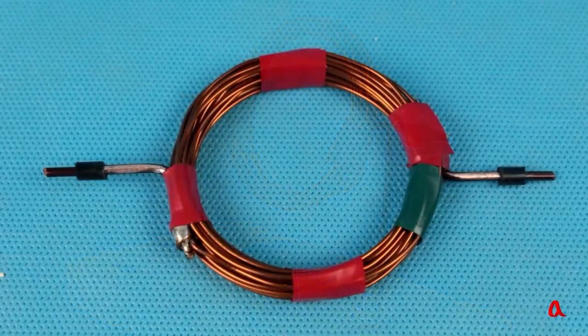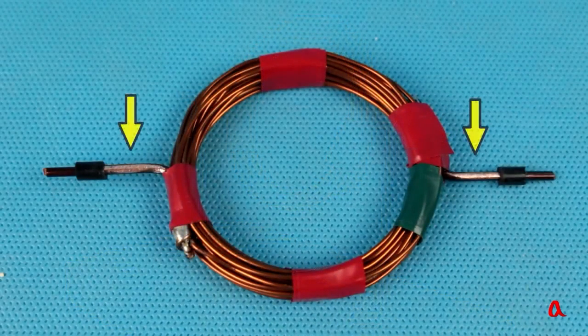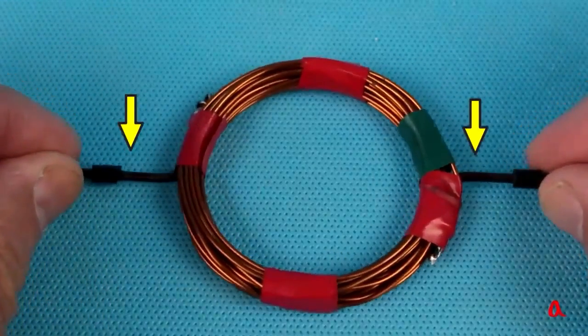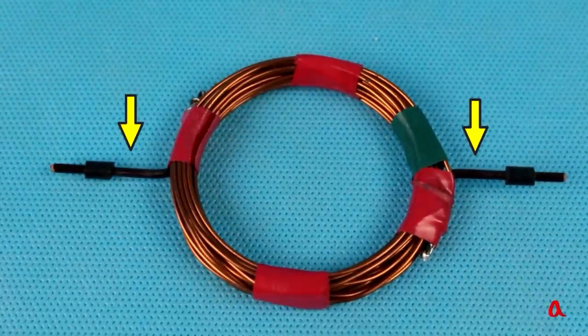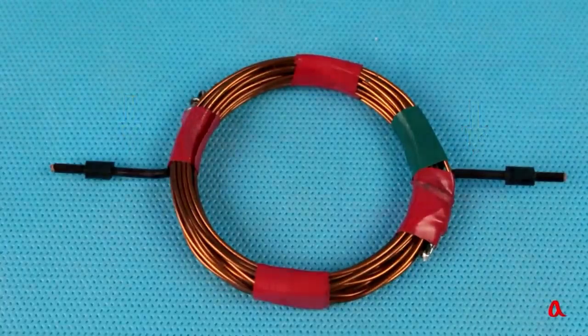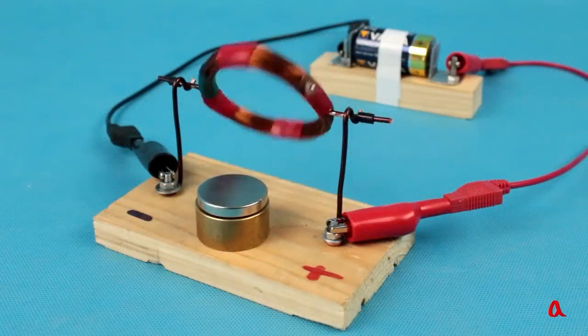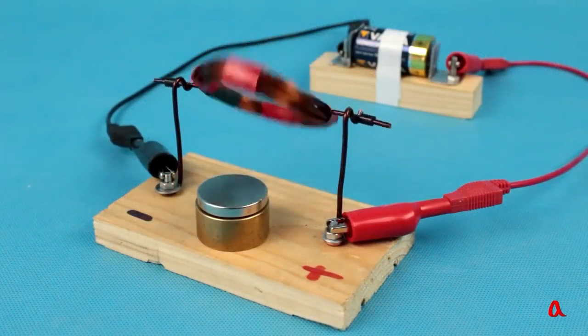How did we solve this problem? Yes, very simple. The lacquer on the leading contacts has been removed on one side, while on the other side it has been left. And we ended up with a kind of collector. The current flows through half a turn of the coil, but does not flow through the other half.